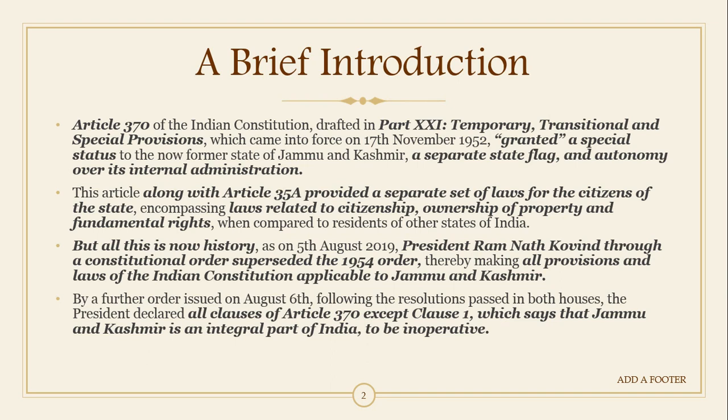That is why Article 370 has now been removed — it has become history as of 5th August 2019. President Ramnath Kovind issued a constitutional order under which he superseded the 1954 order, and all the provisions and laws of the Indian Constitution are now applicable to Jammu and Kashmir. In theory they were not applicable earlier, but in practice most parts of the Indian Constitution were extended to J&K through repeated presidential orders. This presidential order can be seen as the culmination of those orders, which effectively abolished Article 370 except Clause 1.